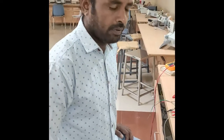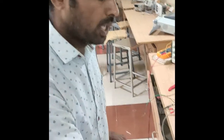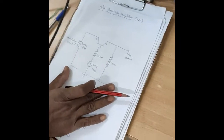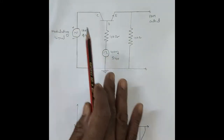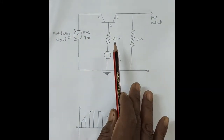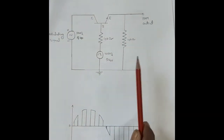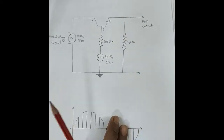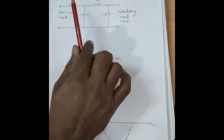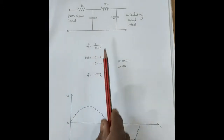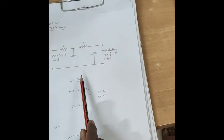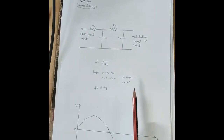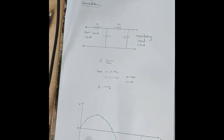Today we are performing Pulse Amplitude Modulation and Demodulation. This is the circuit diagram of Pulse Amplitude Modulation. The modulating signal is given to the collector terminal and the carrier signal is given to the base terminal. The PAM output is taken across the emitter terminal. This is the Pulse Amplitude Demodulation circuit diagram, where the cut-in frequency Fc equals 1 kHz. The condition is Fp equal to 1 by 25 RC, the resistor is 150 ohms, and C is 1 microfarad.